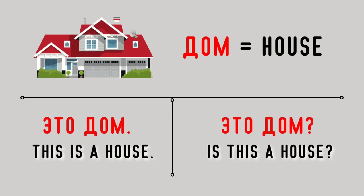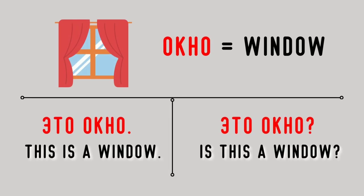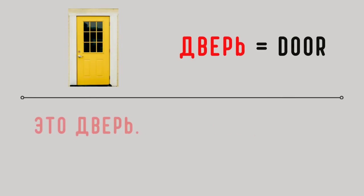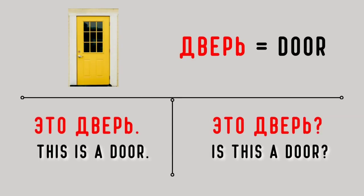Дом — house. Это дом. This is a house. Это дом? Is this a house? Окно — window. Это окно. This is a window. Это окно? Is this a window? Дверь — door. Это дверь. This is a door. Это дверь? Is this a door? Это дверь.